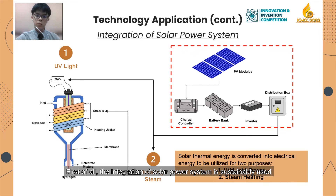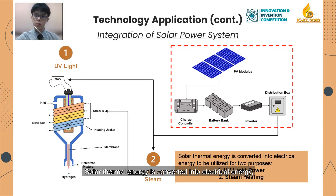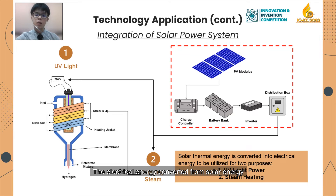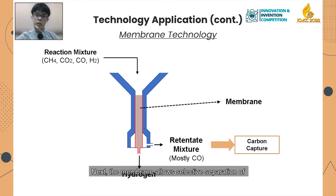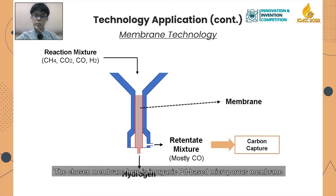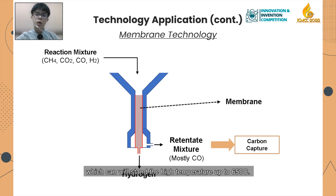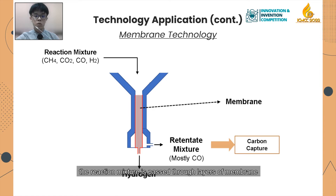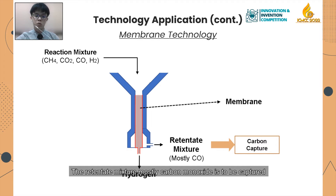The integration of a solar power system is sustainably used to supply electricity to the UV light and steam heating. Solar thermal energy is converted into electrical energy and can be stored in a battery bank in case of poor weather, so reactions can still proceed without being much affected. The electrical energy converted from solar energy helps to compensate a certain amount of energy. The membrane allows selective separation of desired products from undesired products. The chosen membrane is an organic Pd-based microporous membrane which can withstand high temperatures up to 650 degrees Celsius. As the reaction completes at the bottom part of the vortex reactor, the reaction mixture is passed through layers of membrane to separate side products — mostly carbon monoxide — from the desired product, hydrogen. The retained mixture is captured and hydrogen can be obtained at high purity.